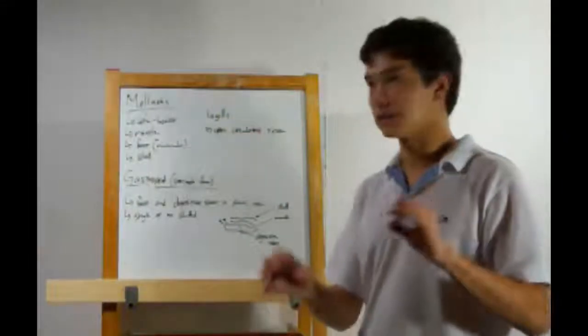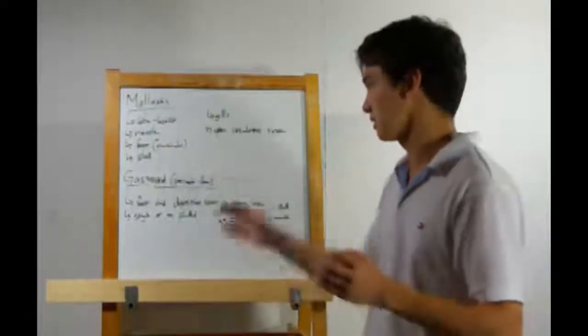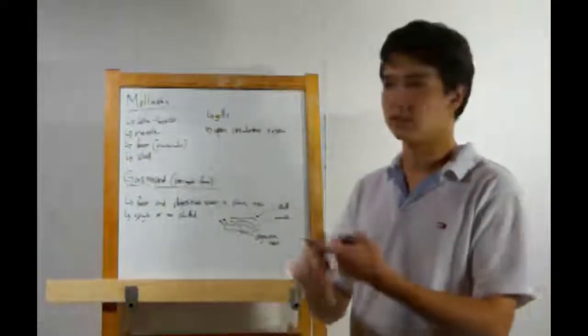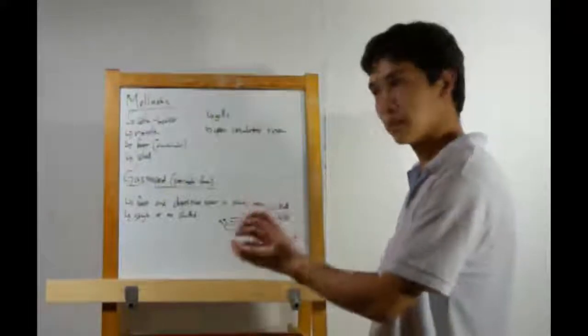Now we're going to start looking at some more specific examples. The gastropod first. This literally means stomach-foot. Why? Because if you look at a gastropod, snails, slugs, whatever, the digestive tract is right where the muscular foot is.